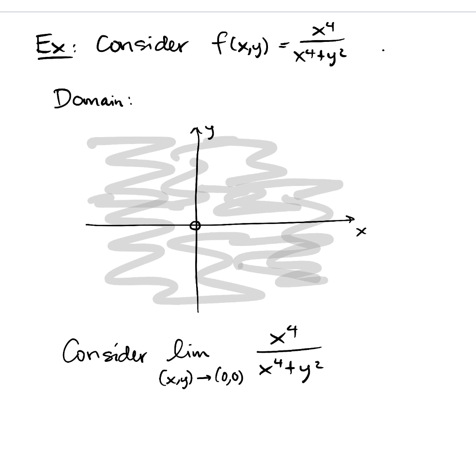So we have to know that on any path towards the origin, this function behaves the same way in order to declare the limit to exist. Put another way, if we found two different paths towards the origin on which the function behaved differently, then we would declare the limit to not exist. So let's start tinkering around with paths. Let's think about different ways to approach the origin. So I'll do paths in red.